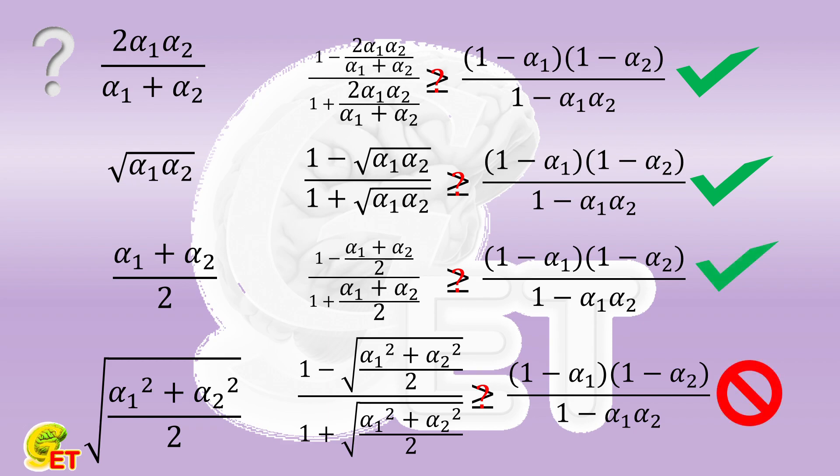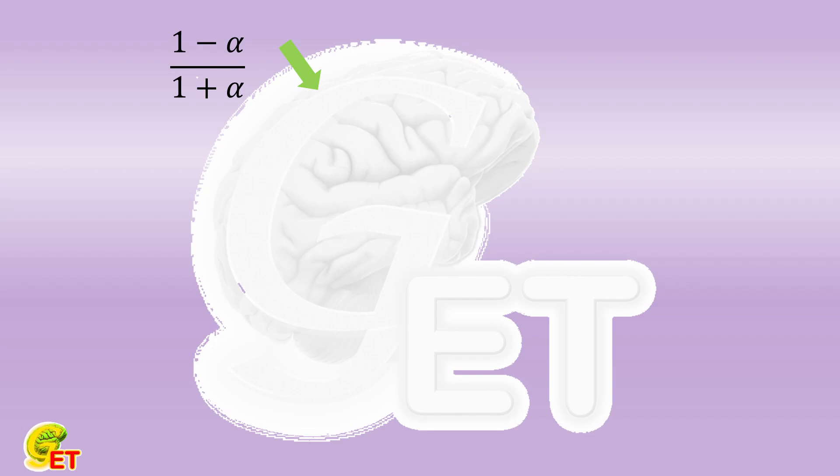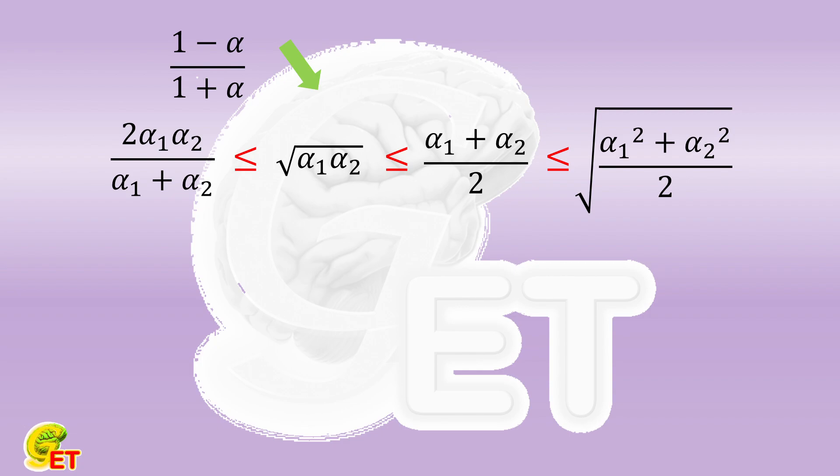How can we prove that the first three are correct? We know that (1 - α)/(1 + α) monotonically decreases with α, simply because its numerator decreases with α and its denominator increases with α. We also know that the harmonic mean is not bigger than the geometric mean, not bigger than the arithmetic mean, and not bigger than the quadratic mean.